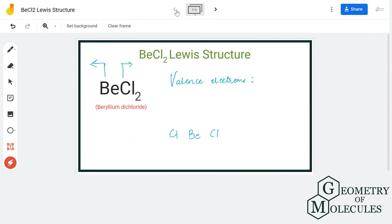Hi guys, in this video we are going to look at the Lewis structure of BeCl2, the chemical formula for beryllium dichloride. It is made up of one beryllium atom and two chlorine atoms. To determine its Lewis structure,